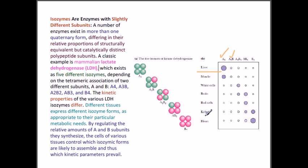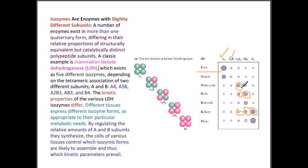In kidney, there is a mixture of B4, AB3, and A2B2. In brain, there is more A2B2 and AB3. In white blood cells, only A2 and B2 are present — a homo-dimer arrangement — with no A4 or A3B species.